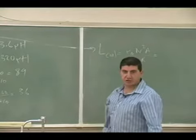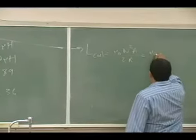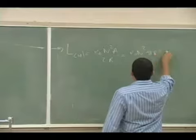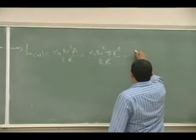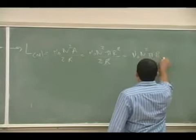And then the area is pi r squared, right? Area is pi r squared, so it becomes... and then the r and r cancel, so it's μ₀ n² π r over 2.